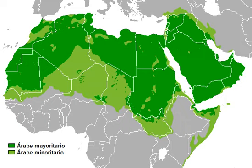In the late 6th century AD, a relatively uniform inter-tribal poetic koine, distinct from the spoken vernaculars, developed based on the Bedouin dialects of Najd, probably in connection with the court of Al-Hira. During the first Islamic century, the majority of Arabic poets spoke Arabic as their mother tongue. Their texts contain traces of non-standardized Classical Arabic elements in morphology and syntax.